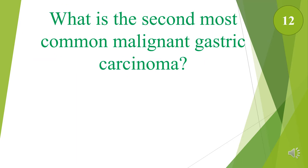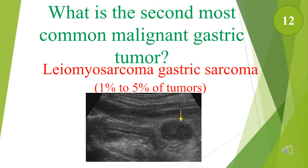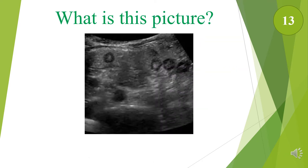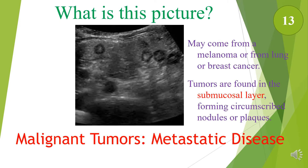What is the second most common malignant gastric tumor? The second most common malignant gastric tumor is leiomyosarcoma, which accounts for 1 to 5 percent of tumors. What does this image depict? These are metastatic tumors, and they may come from melanoma or from lung or breast cancer. These tumors are found in the submucosal layer, forming circumscribed nodules or plaques.